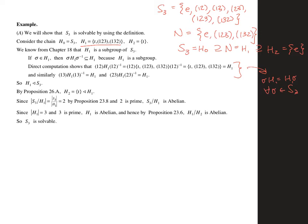Another way of saying this is that the index of H1 in S3 is two, which means that left and right cosets are going to have to be the same. So we know that H1 is normal in S3, and we know that the identity subgroup is normal in H1. Now we look at the quotients of these things. When we take S3 mod H1, we get two elements, and two is a prime, so Cauchy's theorem says that this is abelian. If you have a group of prime order, it's got to be abelian.